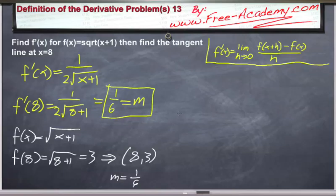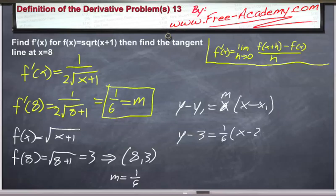Point-slope form of the line is y minus y1 equals m times (x minus x1). So we'll plug our different values in, we get y minus 3 equals 1/6 times (x minus 8). And there we have it, the equation of the tangent line.